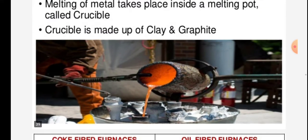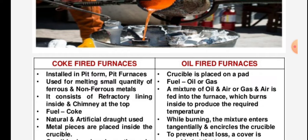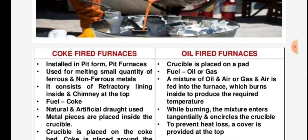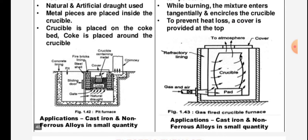The crucible is made up of clay and graphite. The coke-oil pit furnace is installed in pit form and is used for melting small quantities of ferrous and non-ferrous metals. It consists of a refractory lining inside, with a chimney at the top. Natural and artificial draught is used. Metal pieces are placed inside the crucible, which is placed on the coke bed, and coke is placed around the crucible.